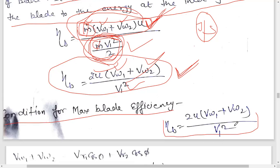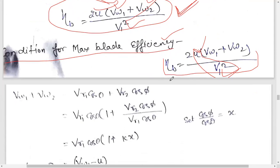Now we have to find the condition for maximum blade efficiency. The condition is in terms of U, the peripheral velocity of the turbine, and V1, the inlet velocity of the steam. To find maximum blade efficiency, we differentiate the efficiency expression and set it equal to zero.